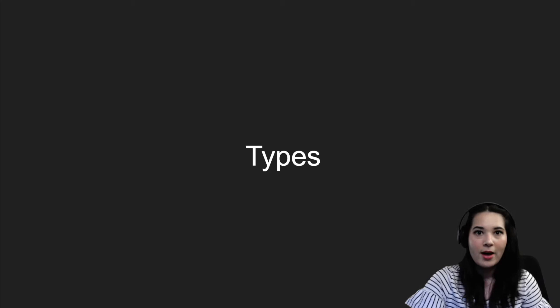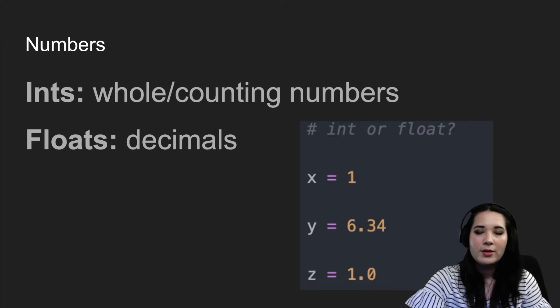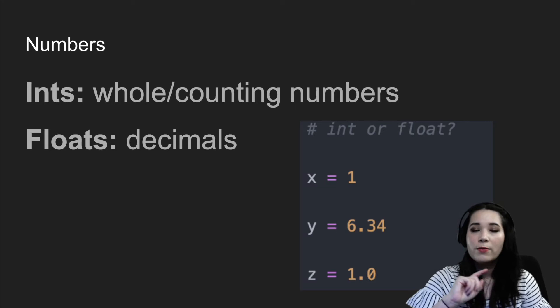Let's talk a little bit about types. Every object in Python has a type and there are many different types, but I'm going to go over the most common ones. First, let's talk about numbers or numeric types. We have two main ways of representing numbers in Python: as an integer or a whole number, and as a floating-point number or float, which has decimal points. Let's go to some Python code to check what type these different numbers are.